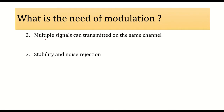Another need of modulation is that we can send multiple signals on the same channel. We cannot make as many channels as there are users, so we require a common channel through which all signals can pass. This is possible when different message signals are each multiplied with different carrier frequencies and then sent on the same channel. At the receiver side, a tuned receiver can receive only the desired signal. This is called multiplexing, and it is made possible using modulation.